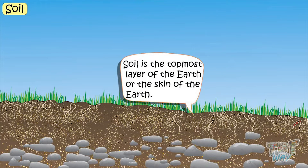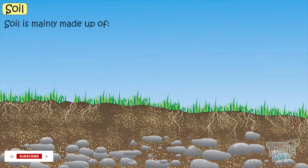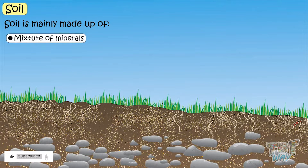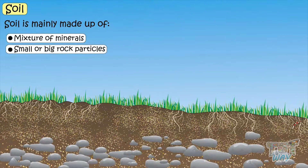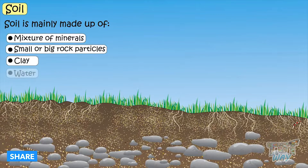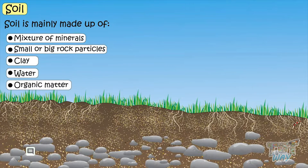Soil is the topmost layer of earth, or the skin of earth, which is mainly made up of a mixture of minerals, small or big rock particles, clay, water, and organic matter.